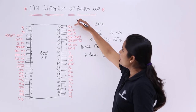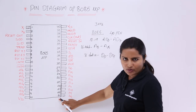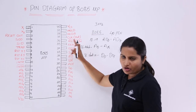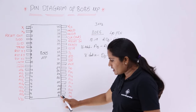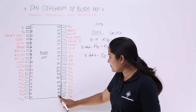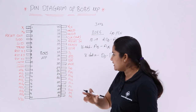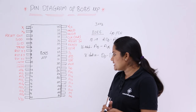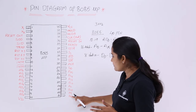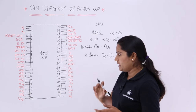From pin 21, we discuss pins from bottom to top. Pins 21 to 28 are only address lines, from A8 to A15.